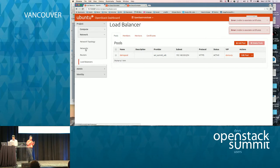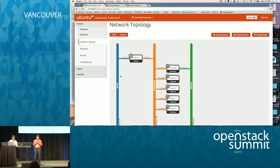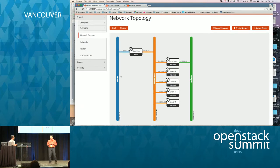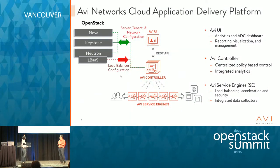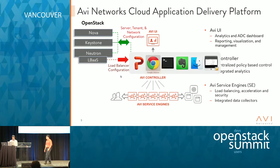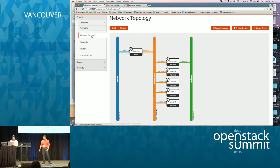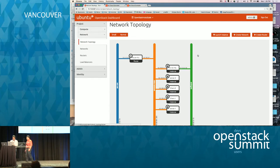We created the VIP through the Horizon Dashboard. What did the Avi controller do at this point? All the LBaaS API calls have been sent to the Avi controller. The controller talks Nova and Neutron APIs to bring up new service engine instances to implement the load balancer. You can see here that we automatically spin up new service engines — right there — and that's the one that's going to implement the load balancing service.